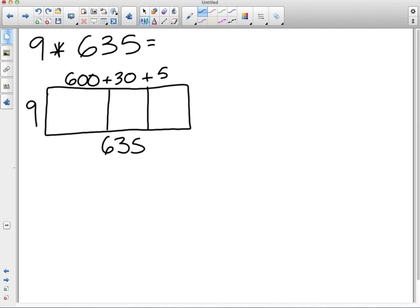So we would do 9 times 600. And 9 times 6 is 54. We know that 9 times 6 is 54. And then we add the two zeros to the 600. That would be 5,400. And then 9 times 30—we know that 9 times 3 is 27. And then we add the 0 from the 30. That's 270. And then 9 times 5 is 45.